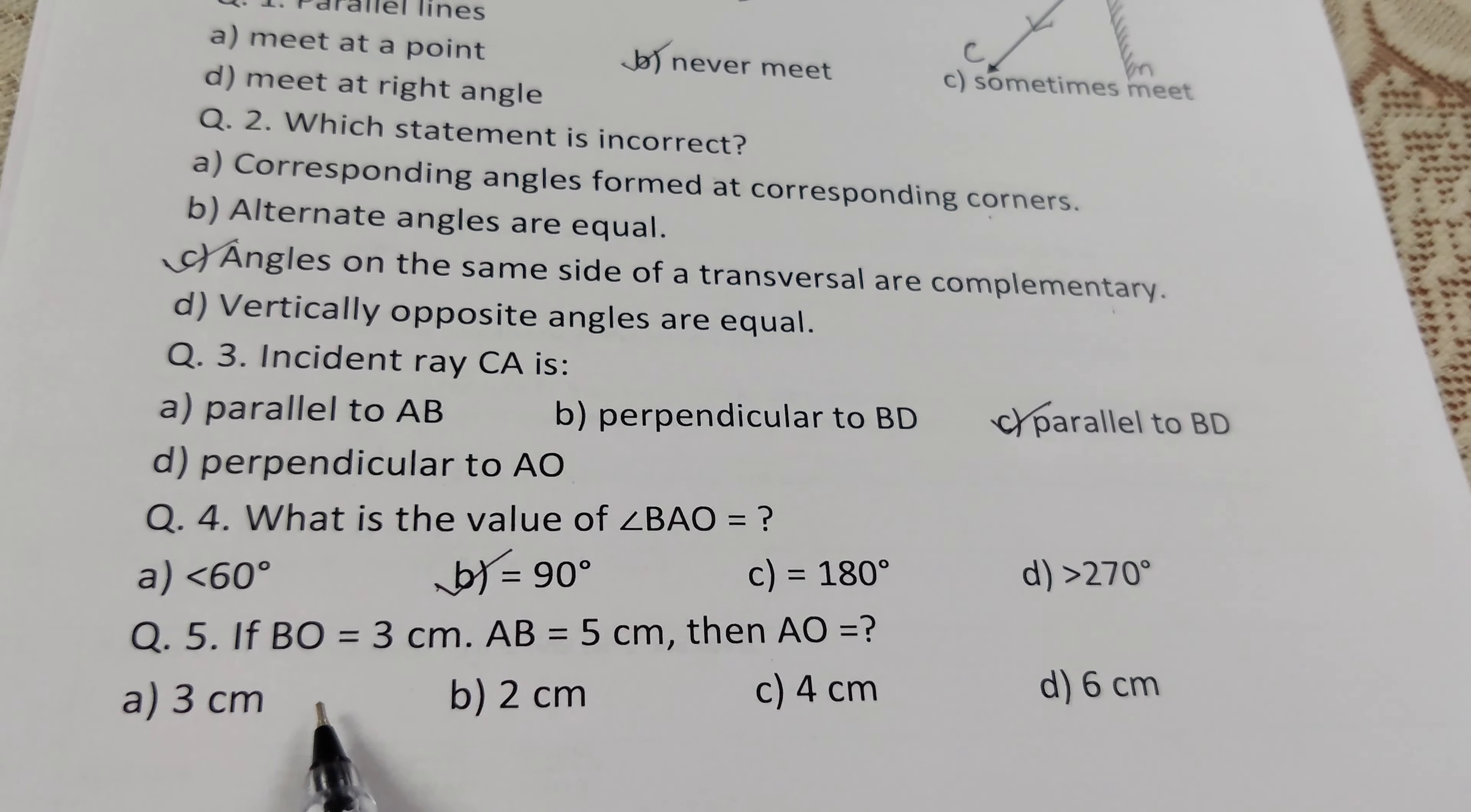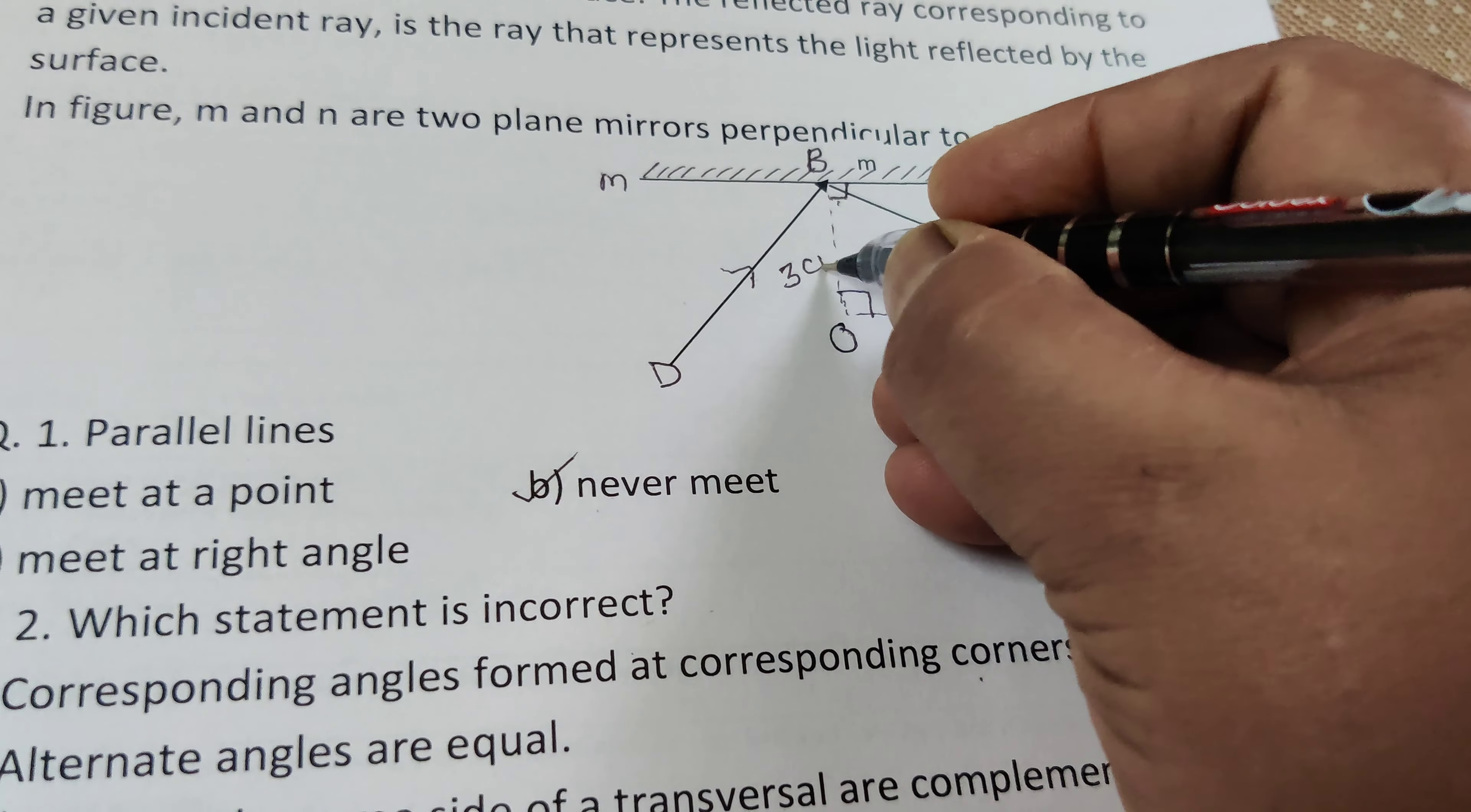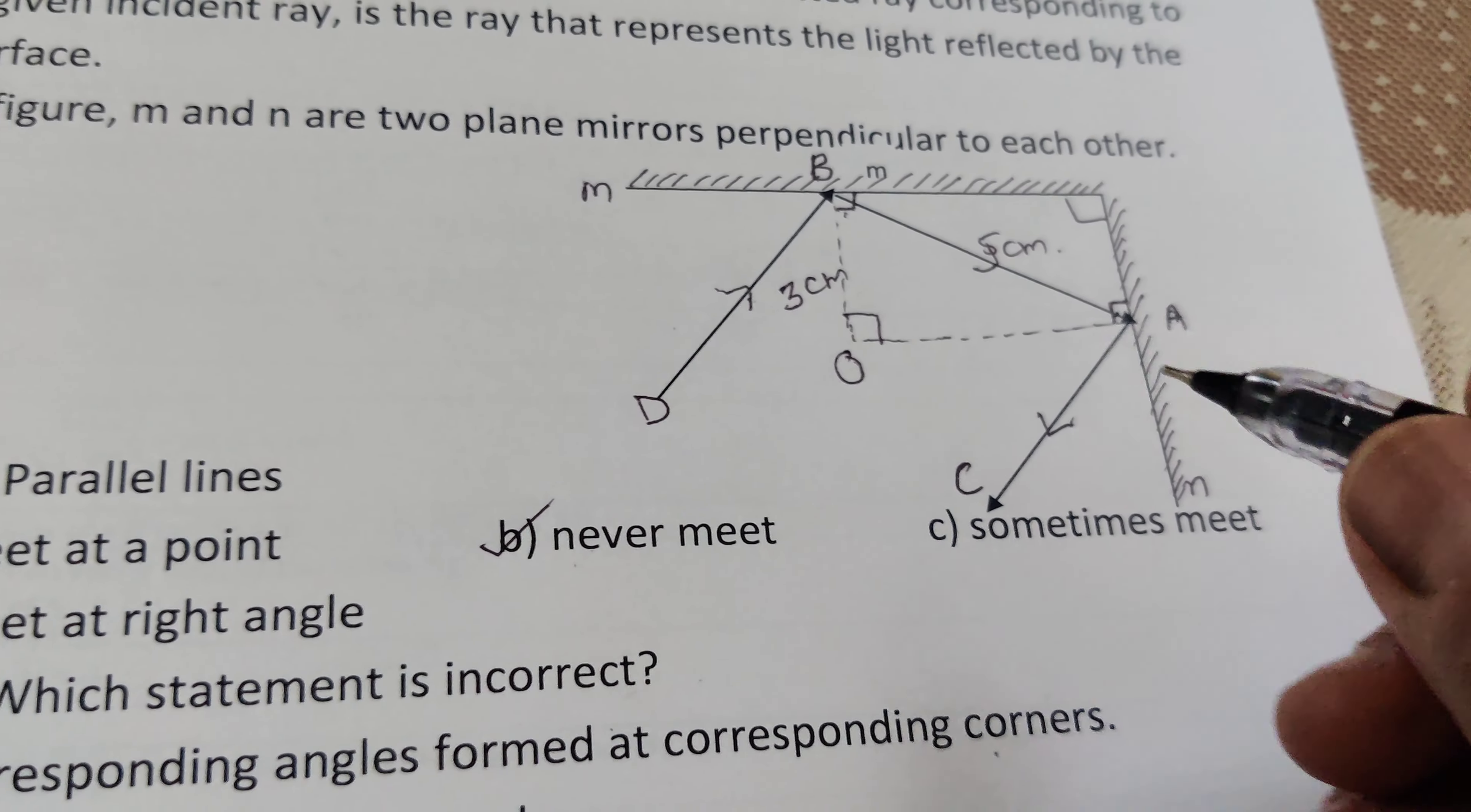Last question: if BO is 3 centimeters, AB is 5 centimeters, then AO equals? BO is 3 centimeters, this one is 5 centimeters, this one is 3. AB is 5 centimeters. Find this by using Pythagoras theorem.